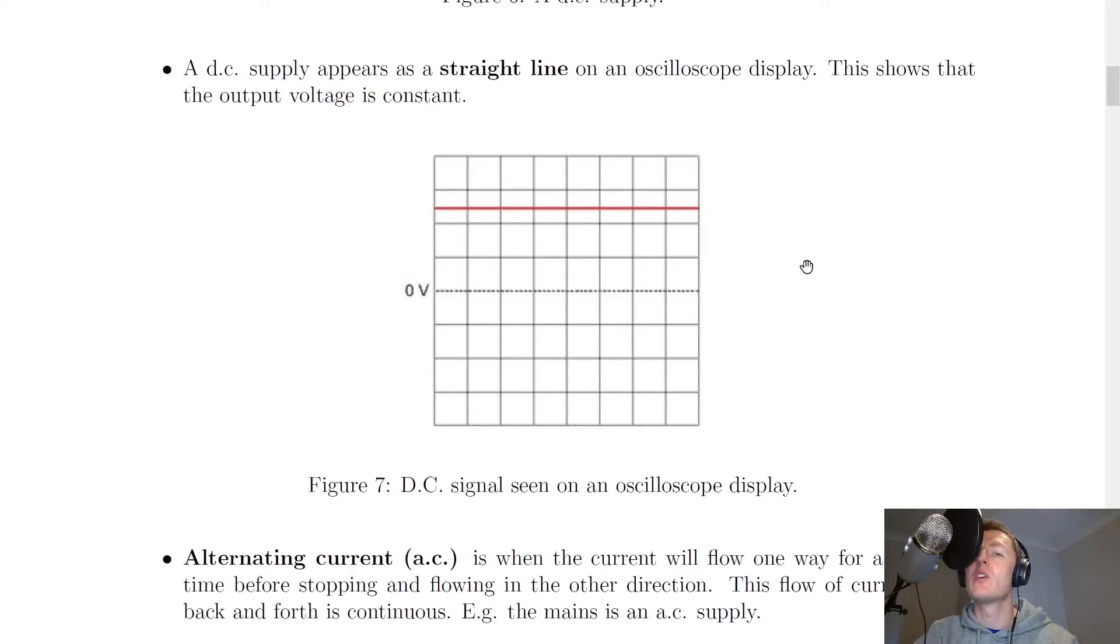Next, we're going to look at what these things look like on an oscilloscope display. So if you connect a DC supply such as a battery to an oscilloscope, then what you'll see is something like this, a straight line on the display. A DC supply appears as a straight line on an oscilloscope display. This shows that the output voltage is constant. So our current is constant and that means our output voltage is constant as well.